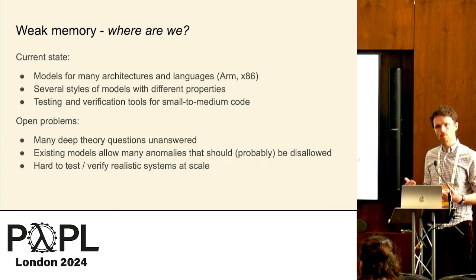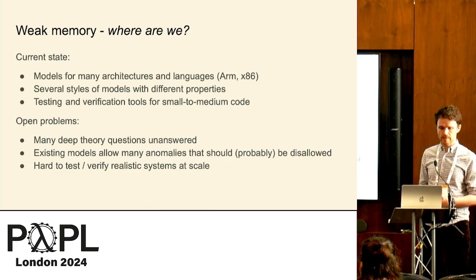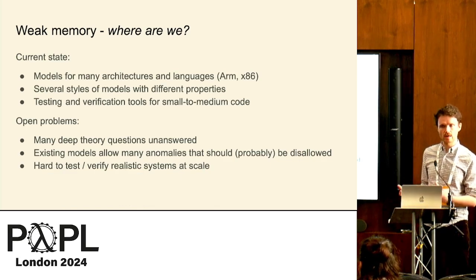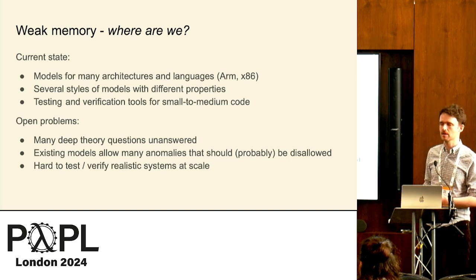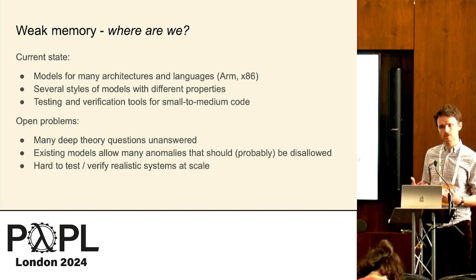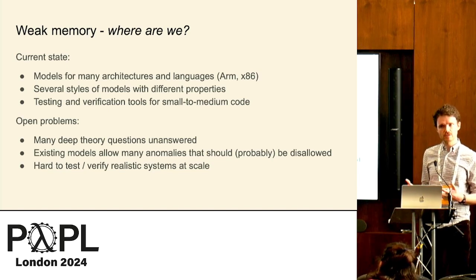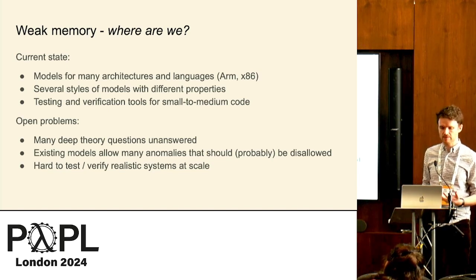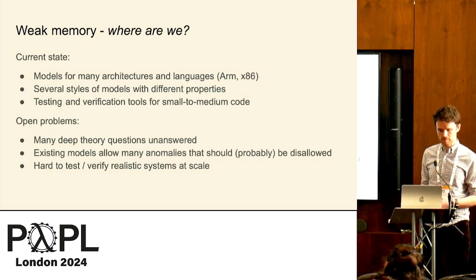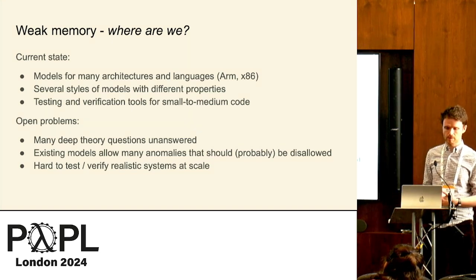In weak memory research, we now have models for many architectures and languages — ARM, x86, Power, and many other things — which do a reasonable job of accounting for these behaviors. There are several different semantic styles of model with different properties, and we have testing and verification tools for small and medium-sized bits of code. But there are lots of open problems.